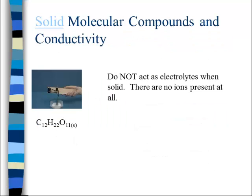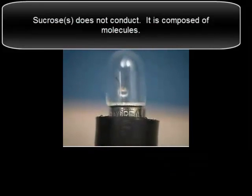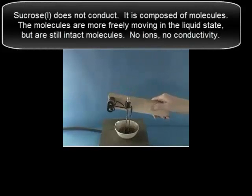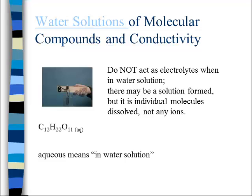Let's take a look at the conductivity of table sugar, sucrose. As a solid, it's a molecular compound with no free-moving ions. As a liquid — this means someone took table sugar and got it hot enough so that it melted. It is molten sugar, not dissolved in water, and molten sugar melts as molecules. Table sugar in water, sucrose(aq), does dissolve because it's a polar substance and water is polar. But when it dissolves, it dissolves as intact molecules.